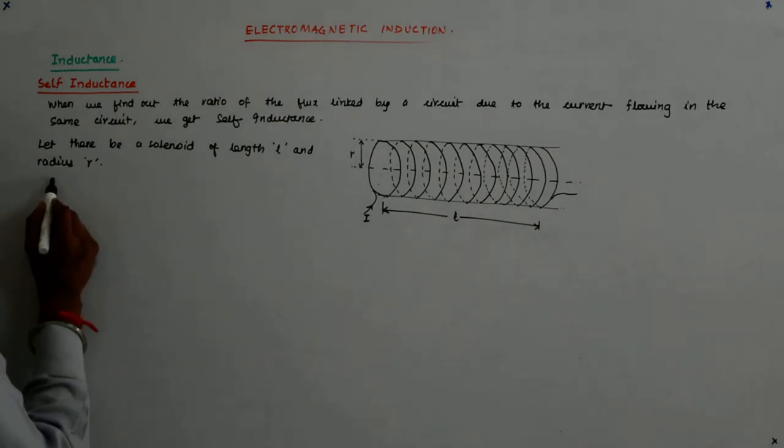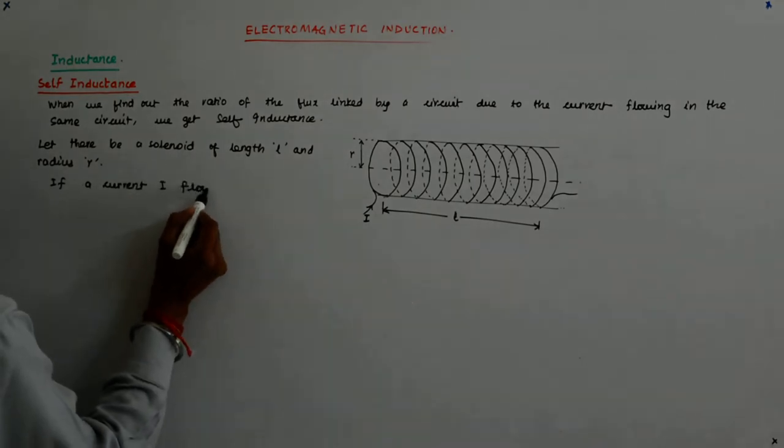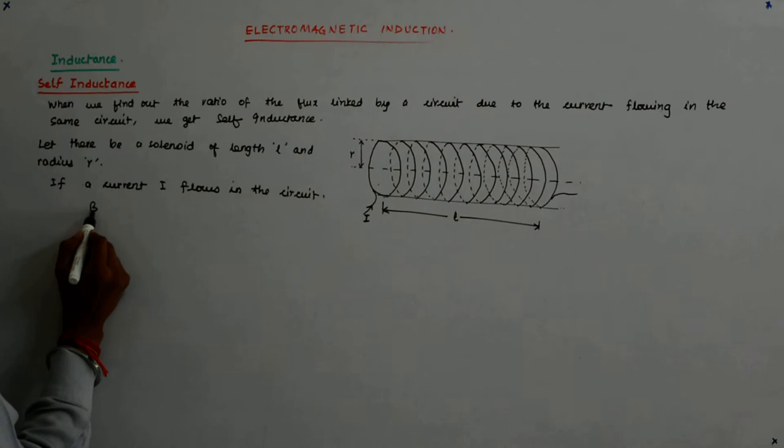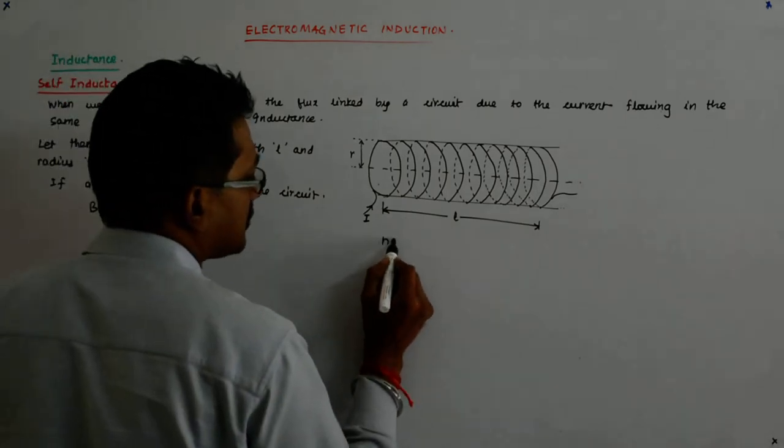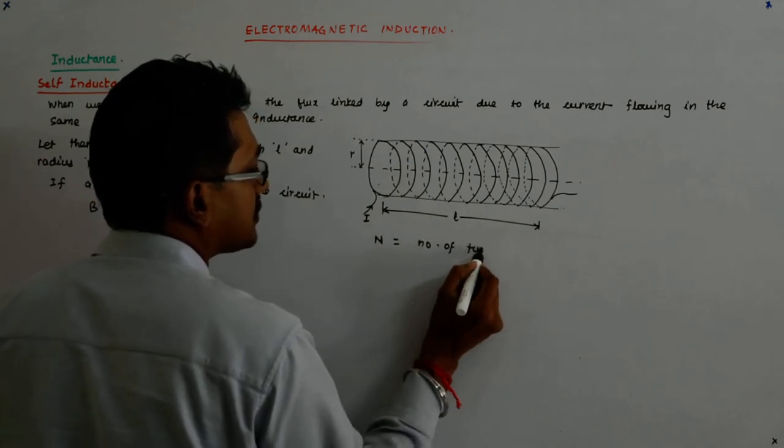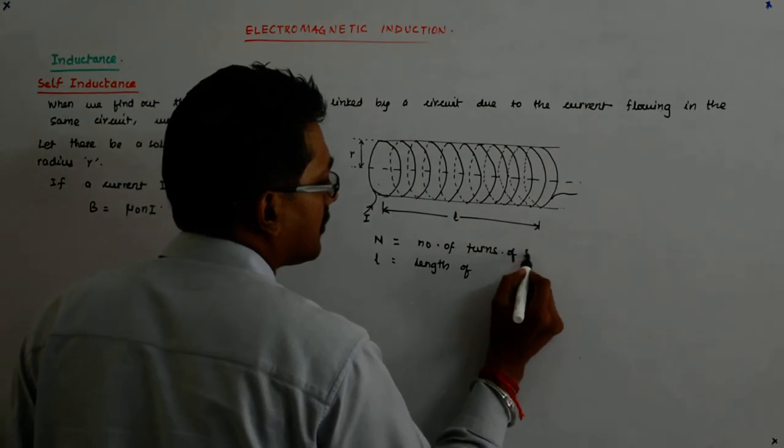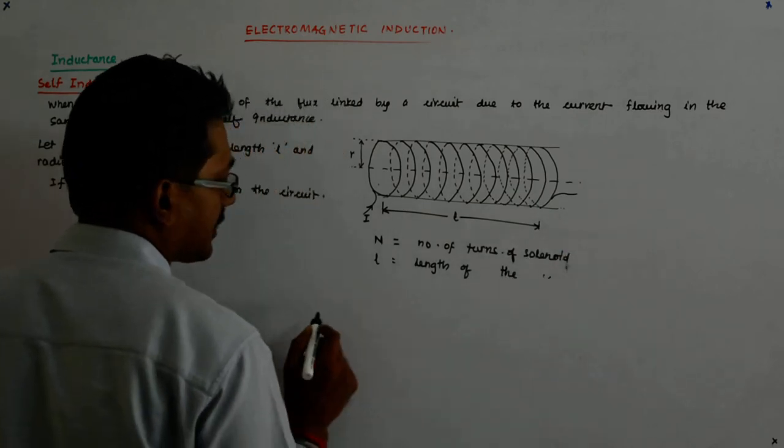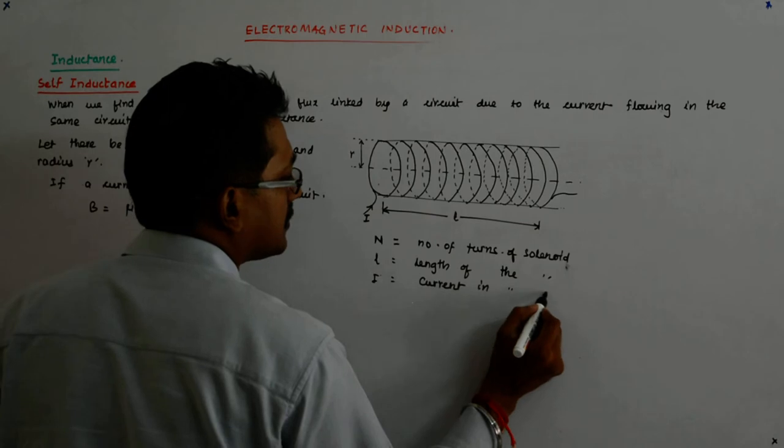So what happens? If a current I flows in the circuit, then B equals μ₀NI/L. N is the number of turns, L is the length of the solenoid, I is the current in the solenoid.